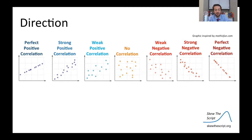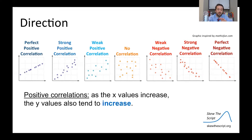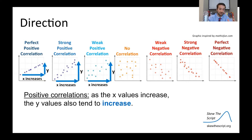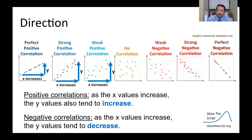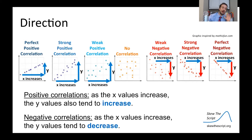Here we have a bunch of different scatter plots. All the way on the left, the most extreme, is perfect positive correlation; all the way on the right, a perfect negative correlation, and all sorts of correlations in between. A positive correlation is when the x value increases, the y value also tends to increase. For a perfect positive correlation, x increases and y increases, and for both strong and weak positive correlations, when x increases, y will also tend to increase. On the flip side, a negative correlation means as the x values increase, the y values will tend to decrease.